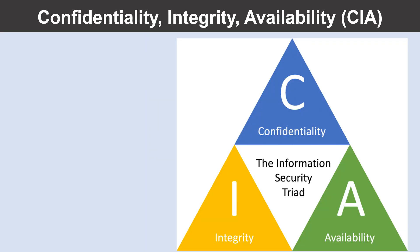Now let us understand Confidentiality, Integrity, and Availability — known as CIA. CIA is a way to think about security trade-offs. This is not a Microsoft model, but is common to all security professionals.